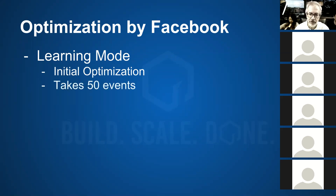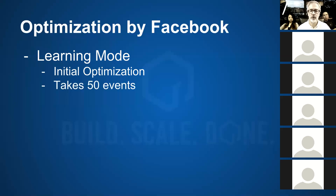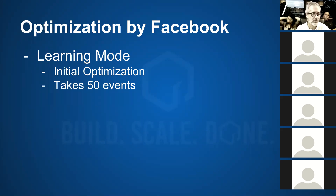The initial optimization takes about 50 events of whatever the event is that you're optimizing for — and again, these numbers are according to Facebook. So essentially what they're telling you is: within the first 50 events, it's fairly random. They're trying to make it settle down and improve over the course of those 50 events, but basically what they're saying is whatever you're seeing within the first 50 events is pretty unreliable and could be completely different the next day. That matches your experiences — some days it's great and then the next day it's not great at all. Facebook is saying that's to be expected; it takes 50 events to settle in and get in the groove.